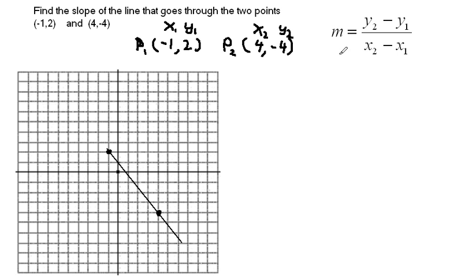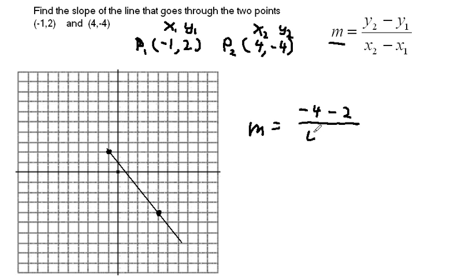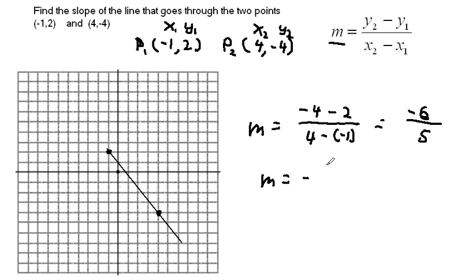Now we simply plug these values into the formula and get the slope — they use the letter m to indicate slope. So m equals y2 minus y1 over x2 minus x1, which is negative 4 minus 2, over 4 minus negative 1. I have to be careful to keep the integrity of the sign of negative 1. On top that gives negative 6, and on the bottom 4 minus negative 1 is 5. So my slope is negative 6 fifths.